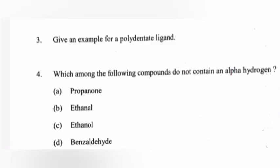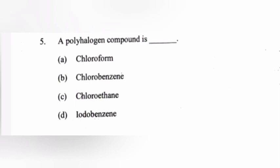Question 4: Which among the following compounds does not contain an alpha hydrogen? A. Propanone, B. Ethanal, C. Ethanol, D. Benzaldehyde. Answer: D, Benzaldehyde.